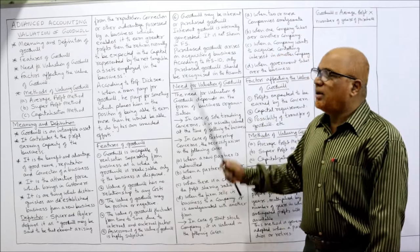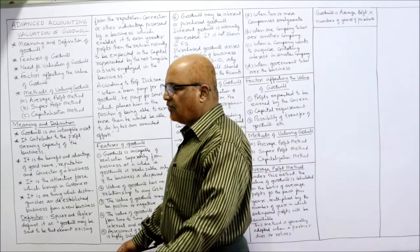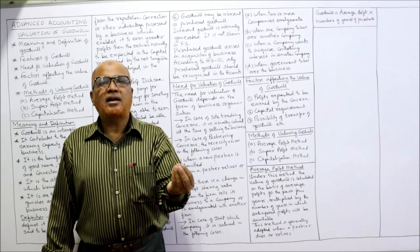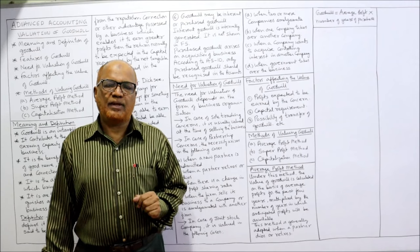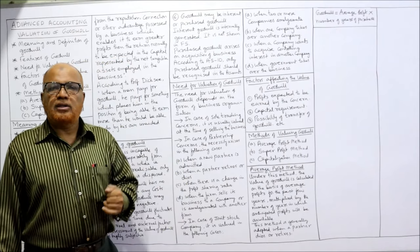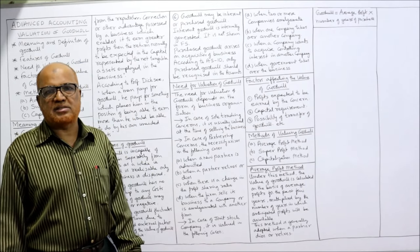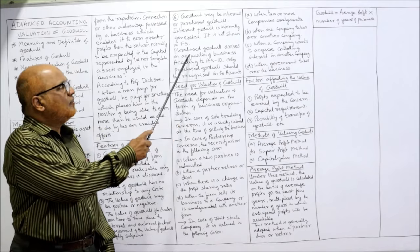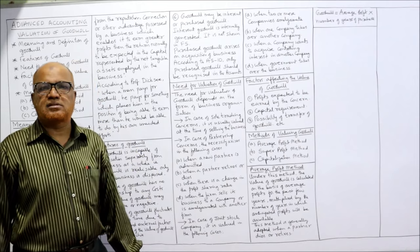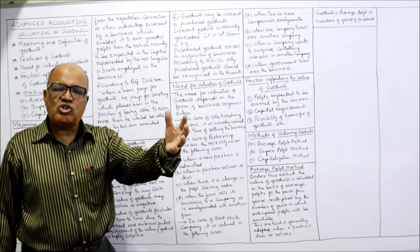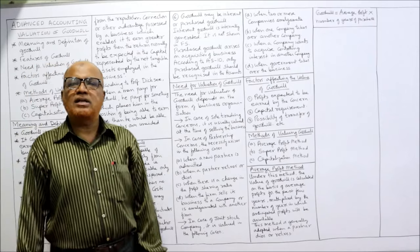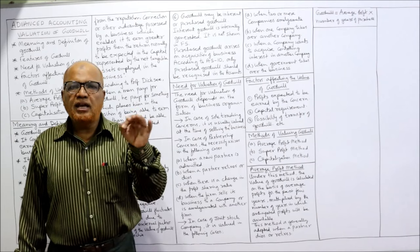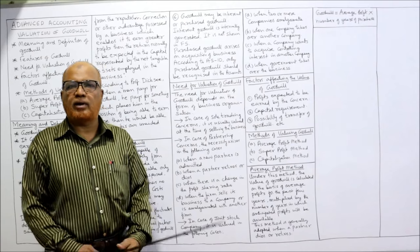Goodwill may be inherent or purchased. Inherent goodwill means self-generated goodwill — goodwill created by the business itself — also called internally generated goodwill. Purchased goodwill is the goodwill which is purchased at the time of acquiring another business. According to Accounting Standard 10 (AS 10), only purchased goodwill can be shown in the financial statements. Inherent or internally generated goodwill should not be shown in the financial statements.